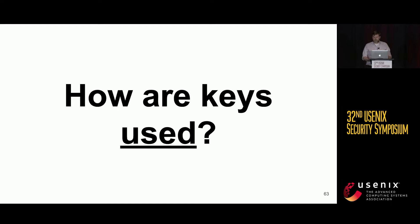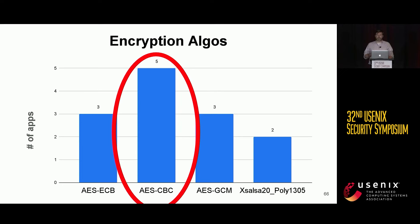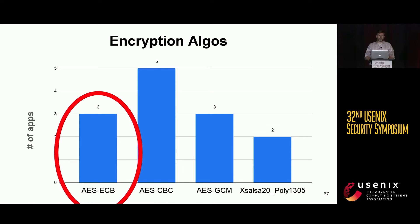Regarding how these keys are used: five apps used AEAD encryption algorithms, which provide built-in integrity. Five apps used AES-CBC, which does not provide integrity by default, and unfortunately most apps did not use a MAC, so there was no integrity of any kind. Most concerningly, three apps used AES-ECB, which is deterministic and should not be used in production projects.